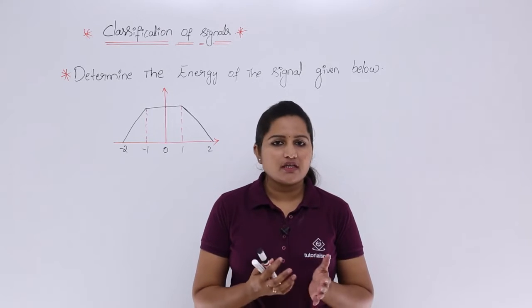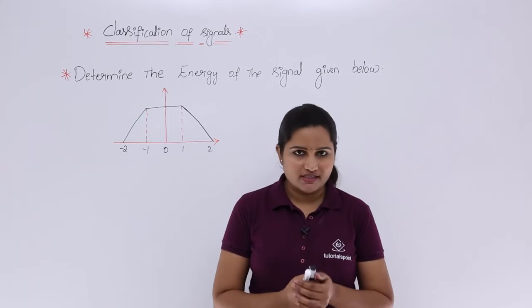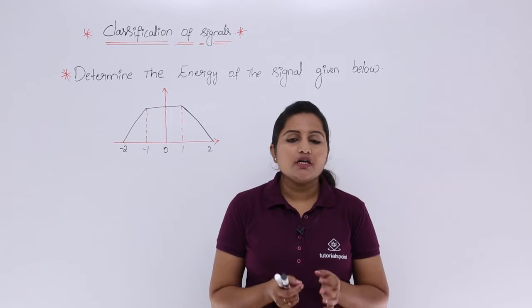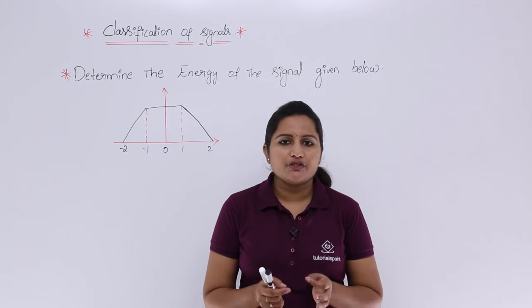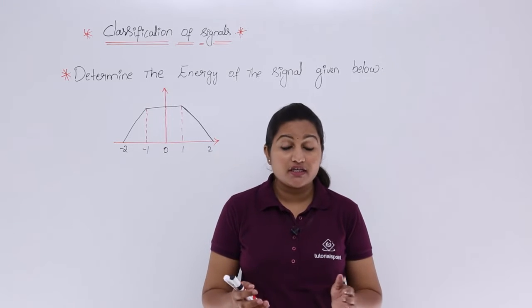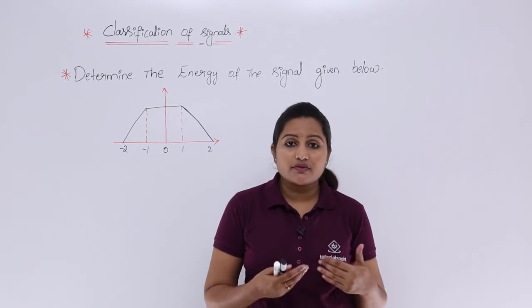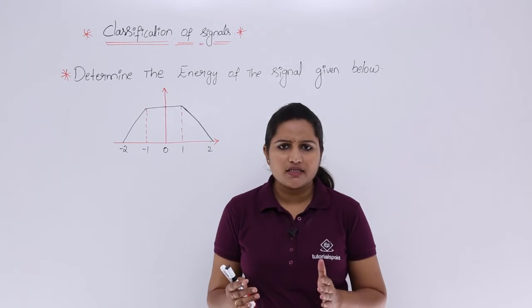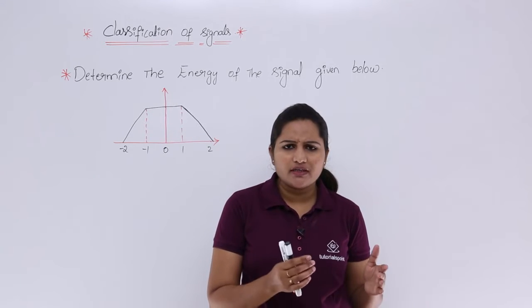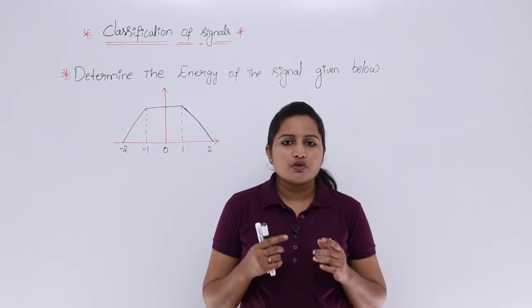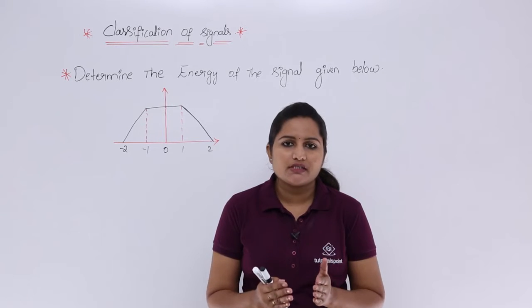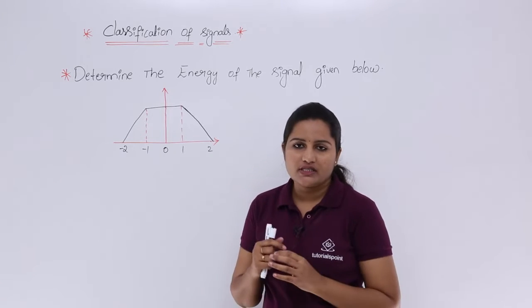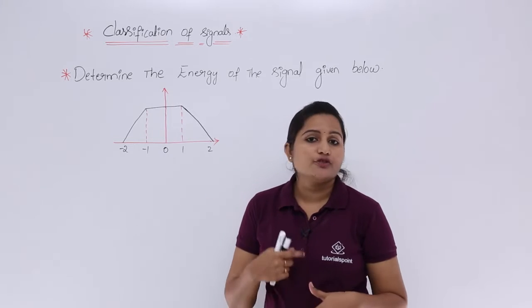In this video we are going to discuss a numerical related to energy and power of a signal. In the last class we also discussed the signal relating to energy calculation. There we discussed a simple way to calculate the energy of a triangular signal. Generally to calculate the energy of a triangular signal is very typical because the triangular signal definition is A times 1 minus modulus of t by T, and if you consider that in the energy equation it gives you a more complex process. To simplify that, we use simple steps by cutting the diagram into 2 ramps. In the same way, we are going to apply that simple procedure here also, where we are given a signal to find out the energy.